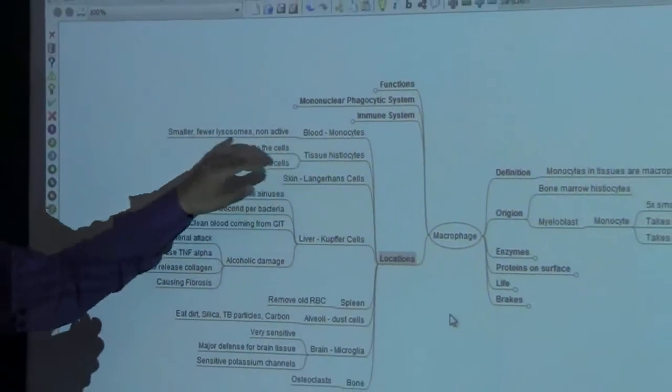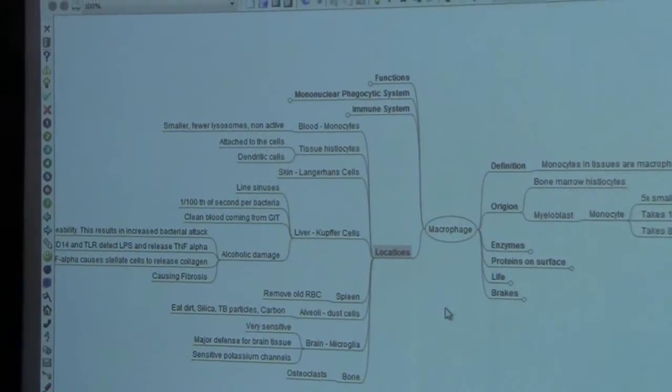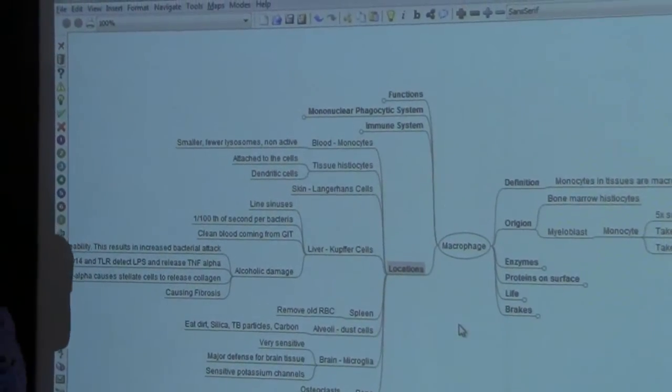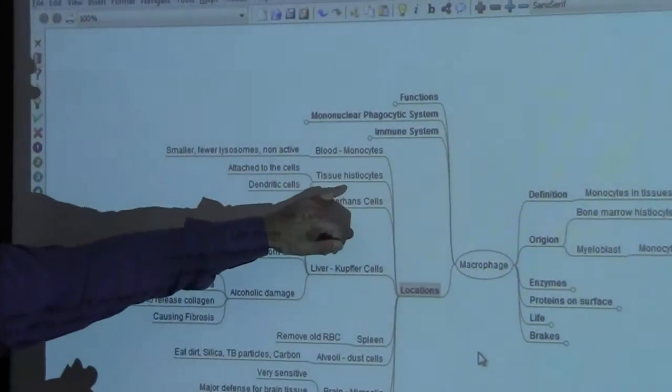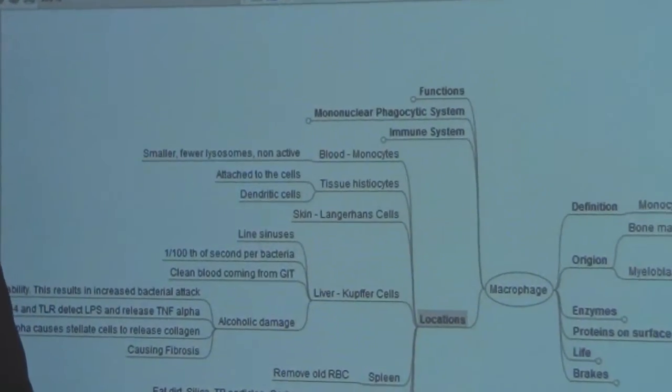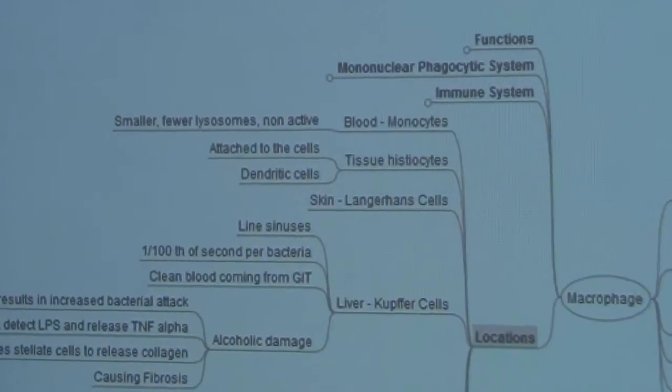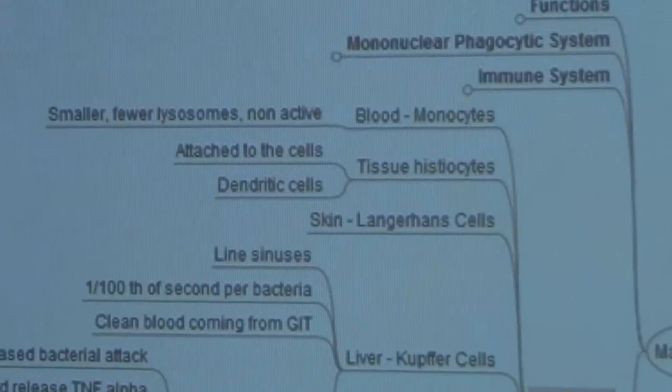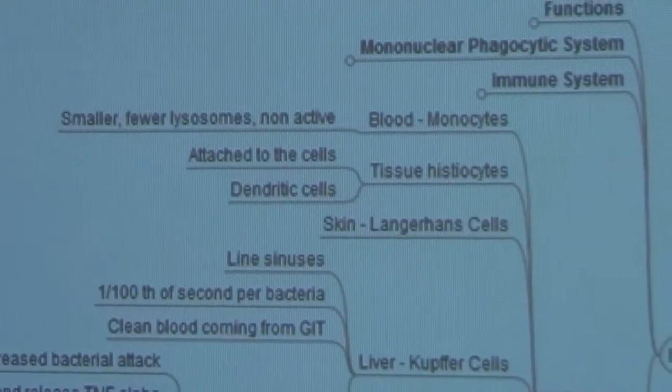So monocytes, they are present in the blood, they are smaller, they are non-active or their activity is negligible. Then, if they are present in the tissue, normally when the monocytes or the macrophages which are present inside the connective tissue, these are called the histiocytes.